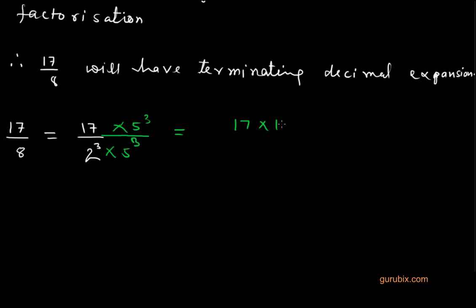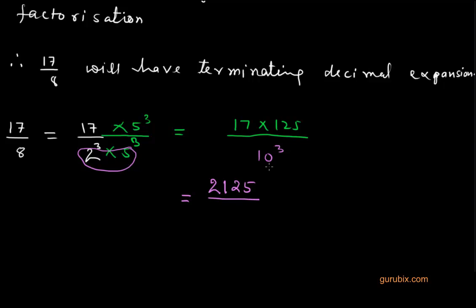So this gives us 17 into 125 in the numerator. And since 2 to the power 3 multiplied by 5 to the power 3 gives us 10 to the power 3 in the denominator. After multiplying 17 and 125, we get 2,125. And expanding 10 to the power 3 gives us 1,000. So we can place the decimal point after 3 places counting from right to left — that is between the 2 and the 1 — giving us 2.125. This is the decimal expansion of 17 over 8.